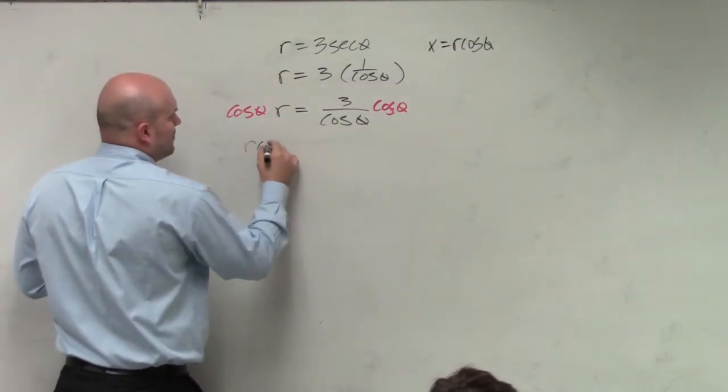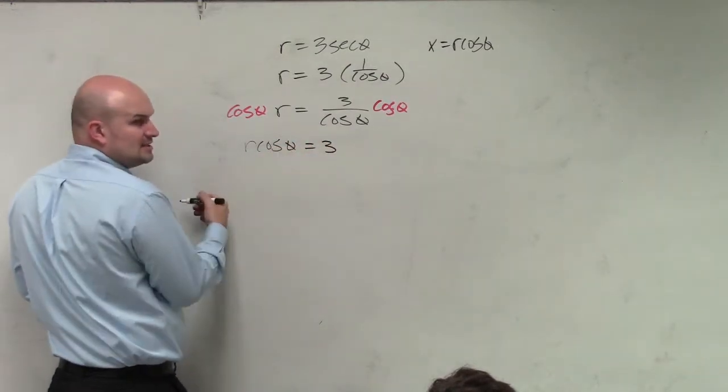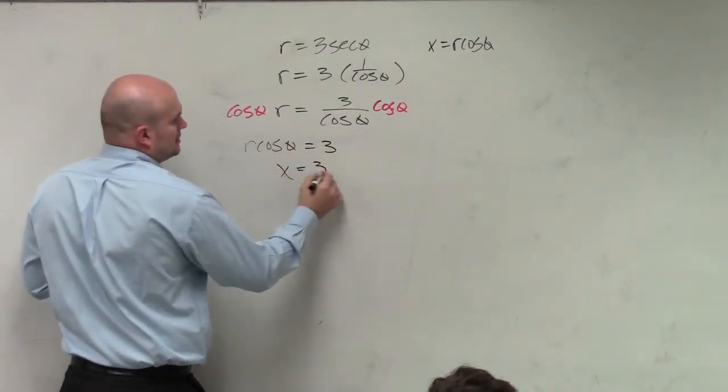Now I have R cosine of theta equals 3. And what does R cosine of theta equal? There we go.